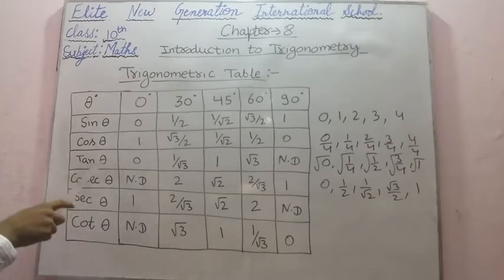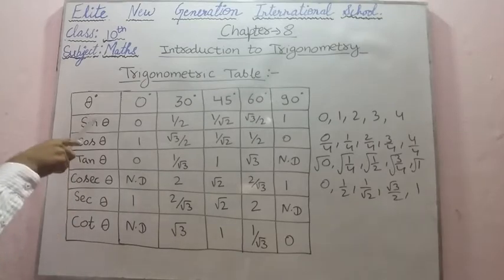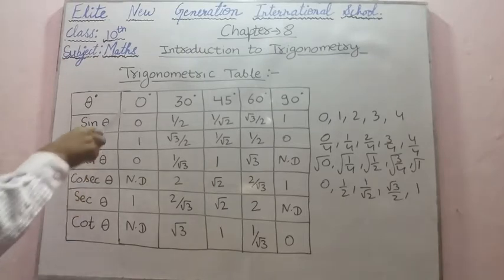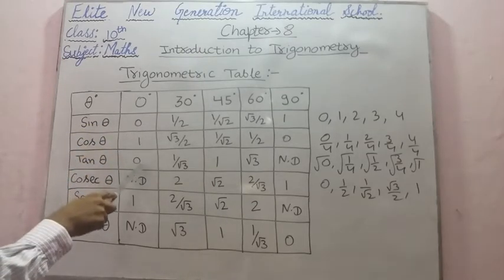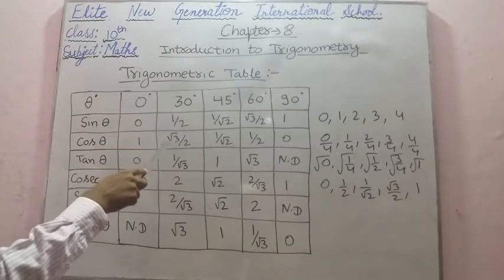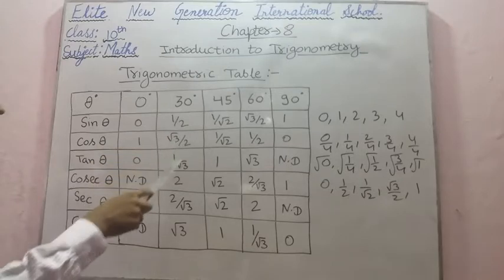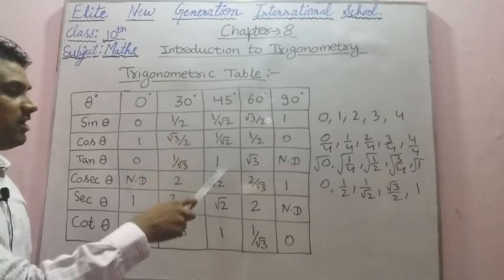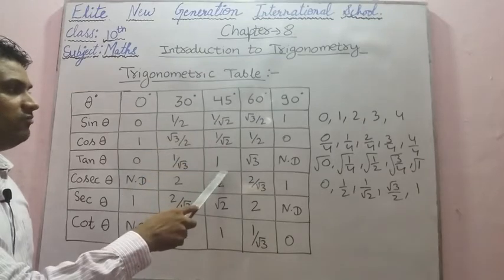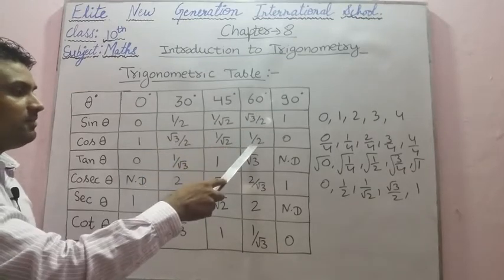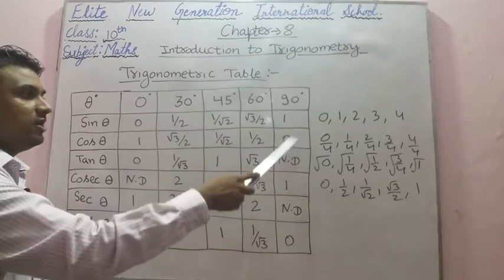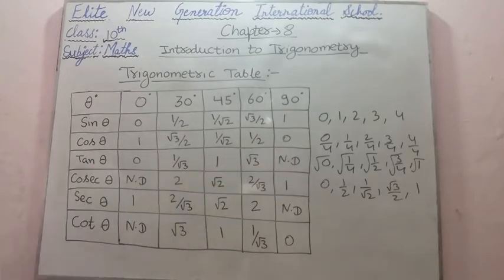For filling the value of tan theta, we know that tan theta equals sin theta upon cos theta. So: 0 divided by 1 is 0; (1/2) divided by (√3/2) is 1/√3; (1/√2) divided by (1/√2) is 1; (√3/2) divided by (1/2) is √3; and 1 upon 0 is not defined.